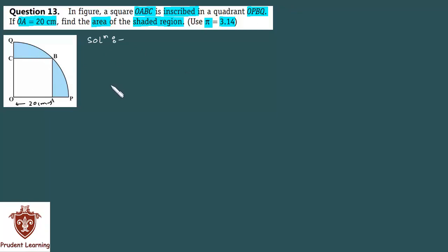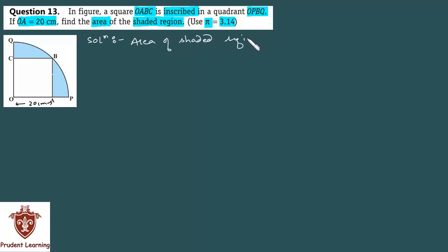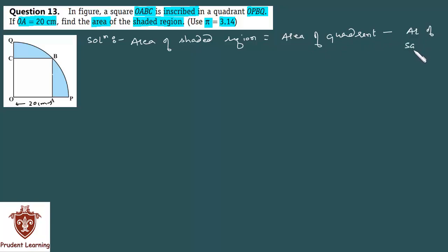I hope logic आप समझ गए होंगे. हमको क्या करना है? इस quadrant के area में से square के area को subtract करना है, तो आपको shaded region का area मिल जाएगा. Here we have: area of shaded region = area of quadrant minus area of square.